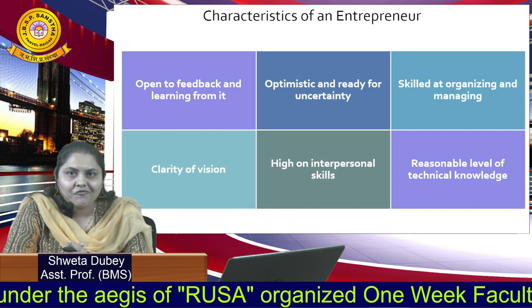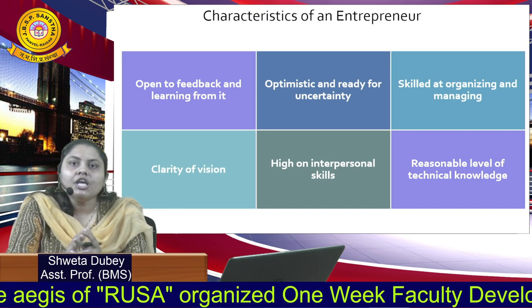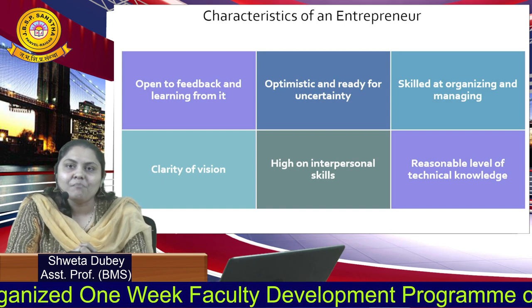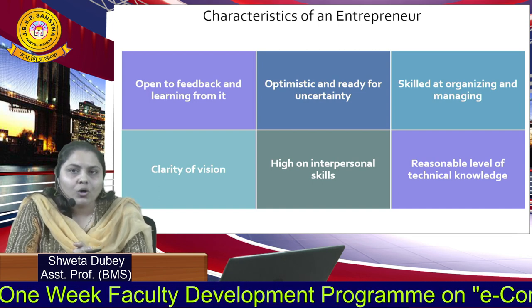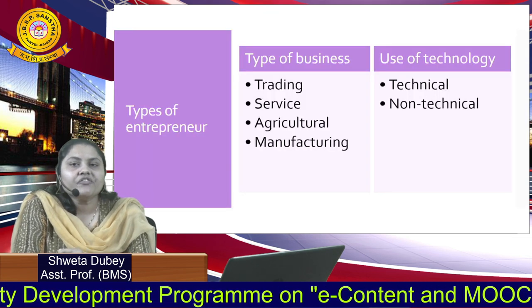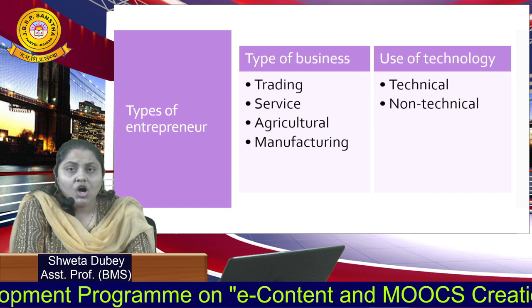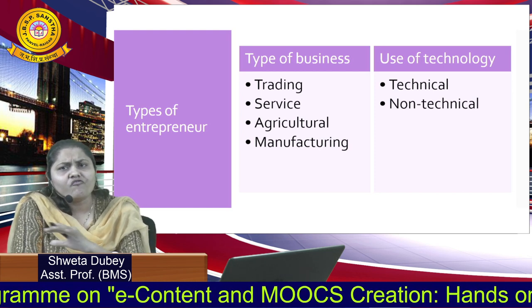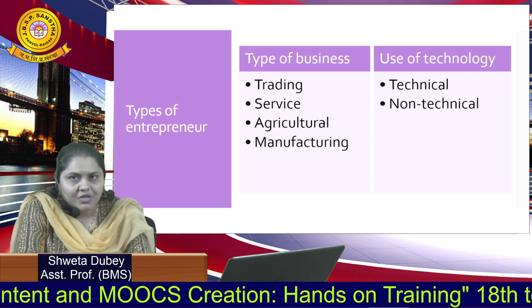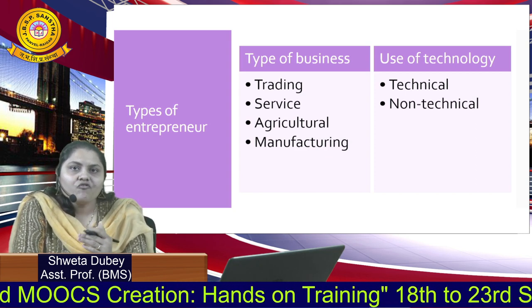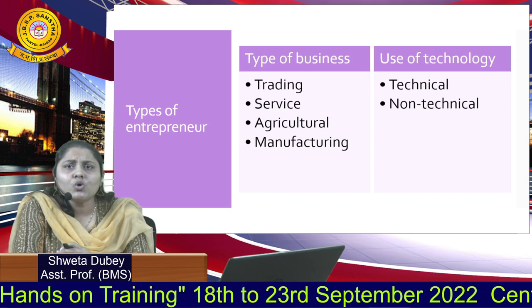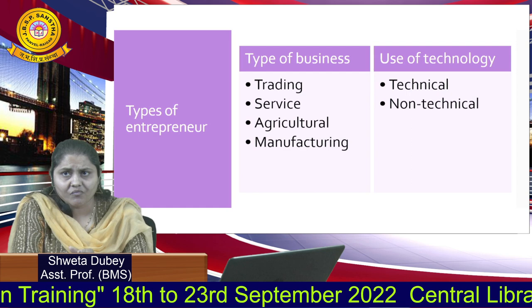He will imbibe all the technical skills and make it a point that all members of the organization also have those technical skills. Now, coming to the different types of entrepreneurs — we can categorize entrepreneurs on the basis of various types. The first is on the basis of the type of business, and we have four types in this. Firstly, there is a trading entrepreneur — someone who is dealing with the import and export of business, not responsible for manufacturing any product but only for selling and buying products.